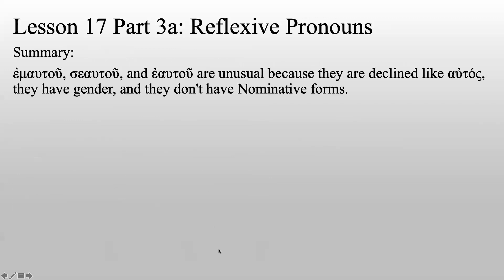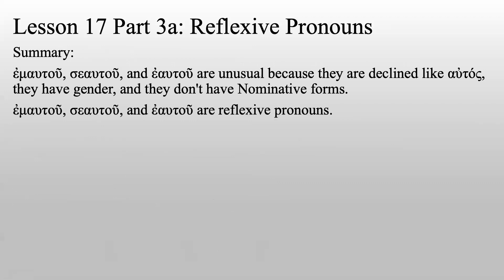Summary: Emautu, seau tu, and heau tu are unusual because they are declined like autos, they have gender, and they don't have nominative forms. Emautu, seau tu, and heau tu are reflexive pronouns.